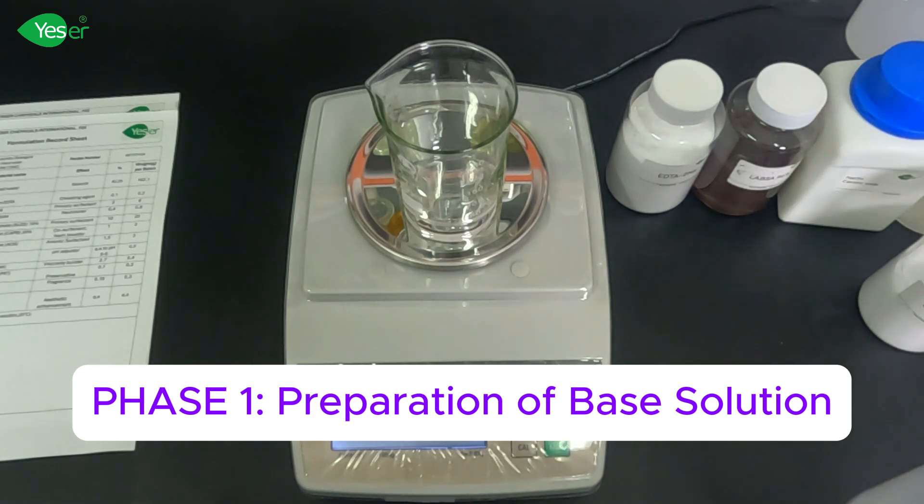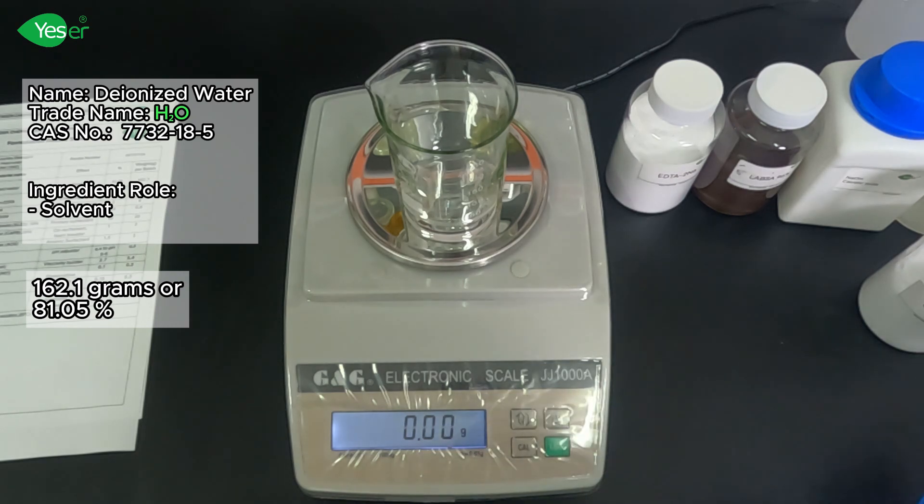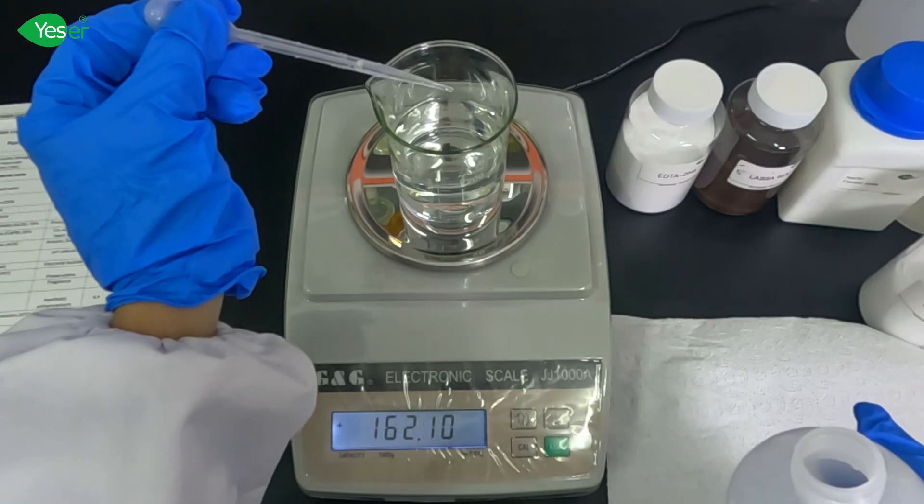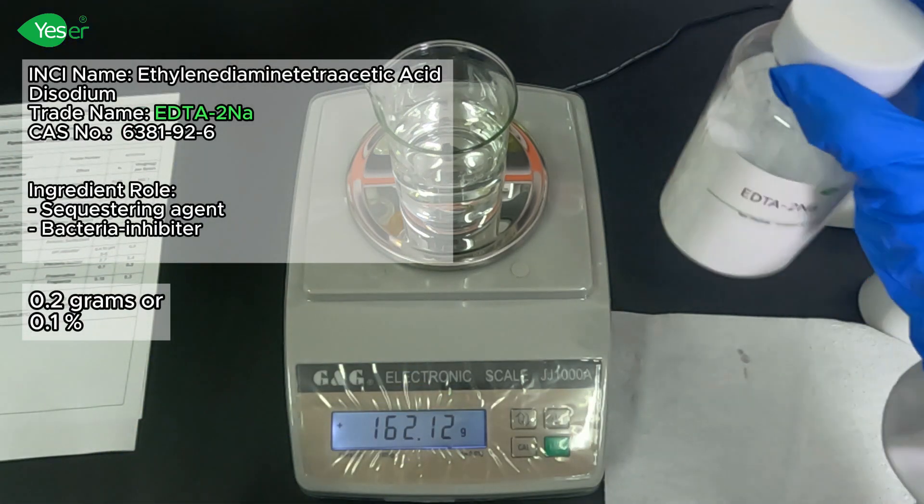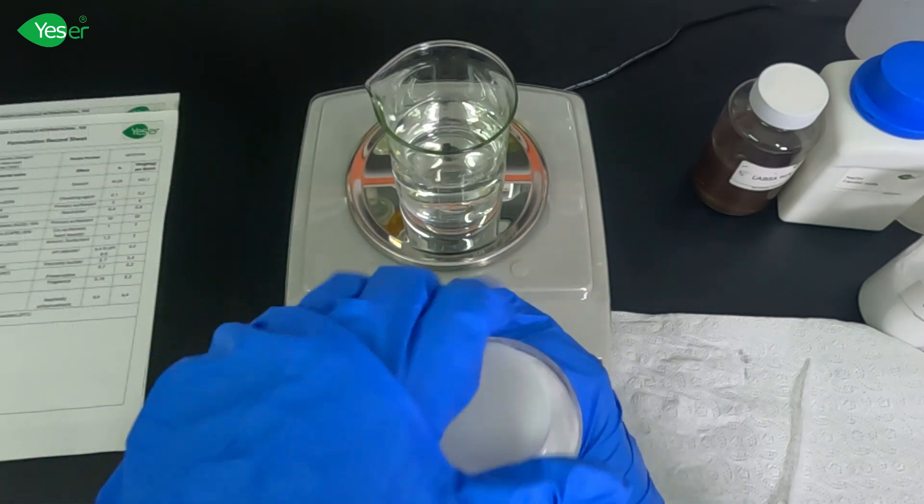We'll start by adding 162.1 grams of deionized water or 81.05% for our formula. Then we will add EDTA-disodium. Weigh 0.2 grams of this or 0.1% for the formula.